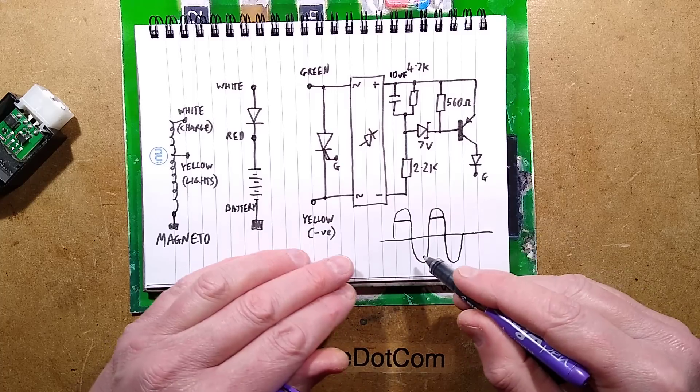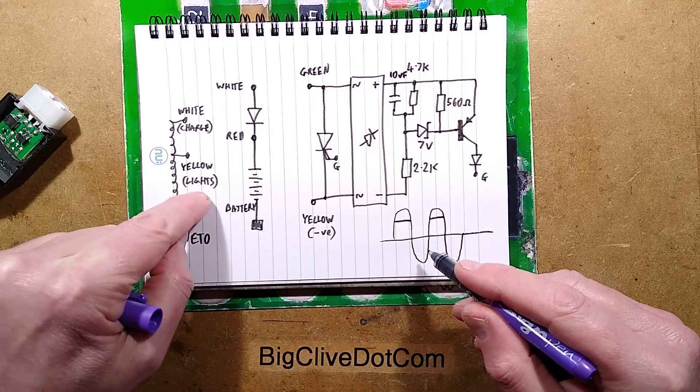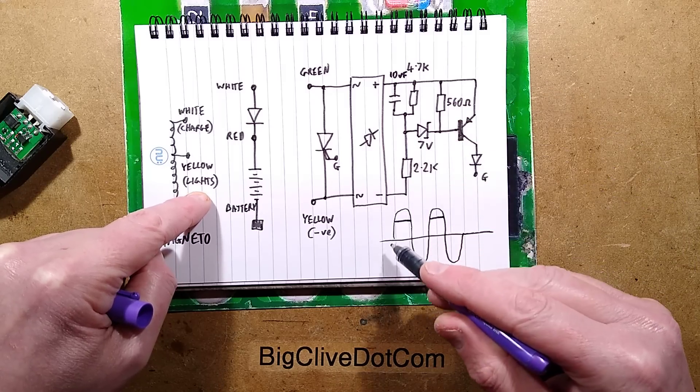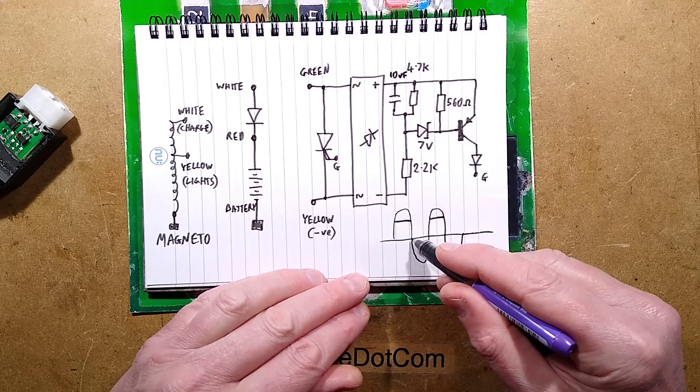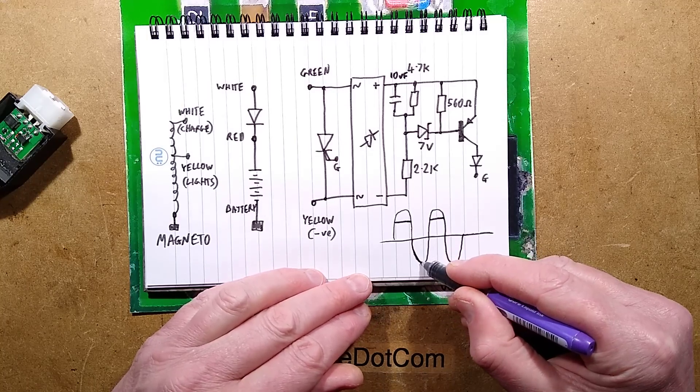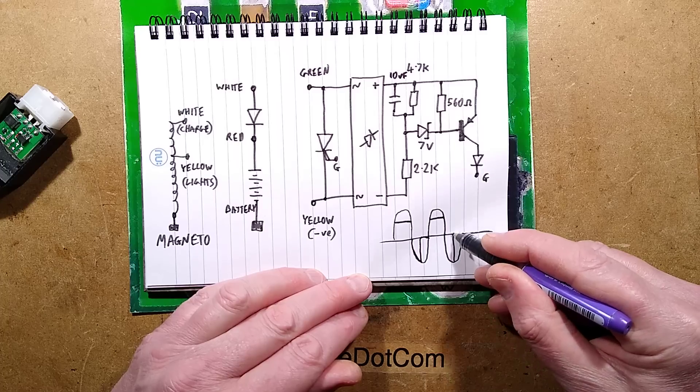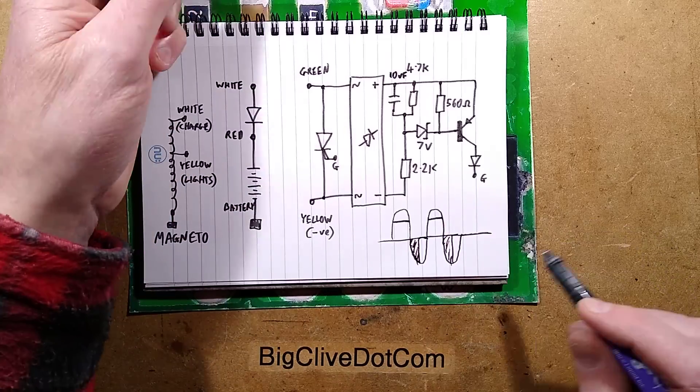The lights are seeing their positive going voltage capped by the battery, but on the negative half of the sine wave as the alternator turns, it goes up to a certain voltage and then it just clips it and shunts it.